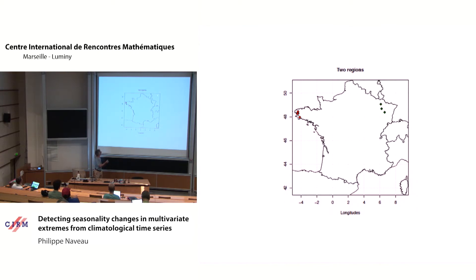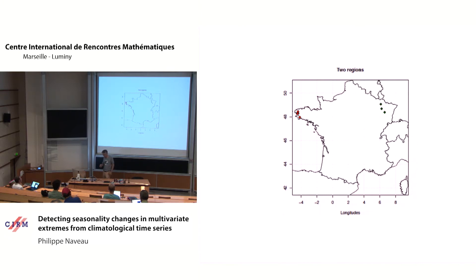In comparison, I'm going to look at three points, two in the east of France. One aspect of this work is that here we have only three stations, but if you work with climate data, you have thousands, tens of thousands of stations or even more. So we want something very fast — but I will come back to that later on.